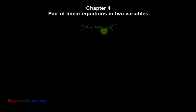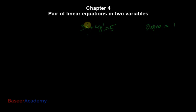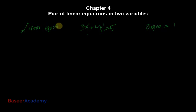This is a linear equation because the degree of this equation is 1. The power of x is 1 and the power of y is 1. We have two variables, x and y. Since the degree is 1, we call it a linear equation, and because it has two variables, it is a linear equation in two variables.